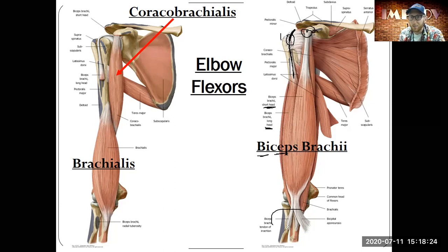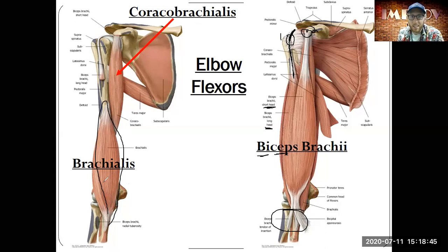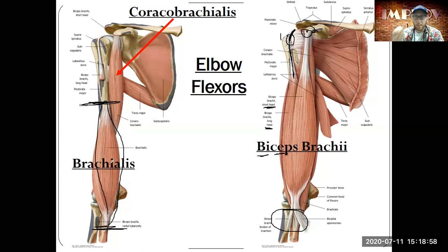The brachialis is a muscle underneath your biceps that many people don't know about. The brachialis originates in the middle of the humerus and travels down to the ulna, with slightly different attachment places than the biceps. It's smaller but does quite a bit of elbow flexion.